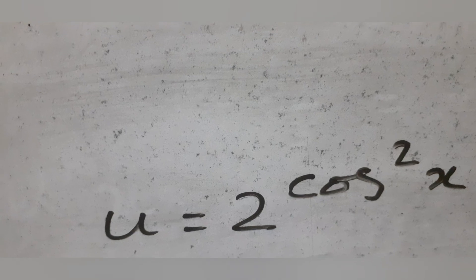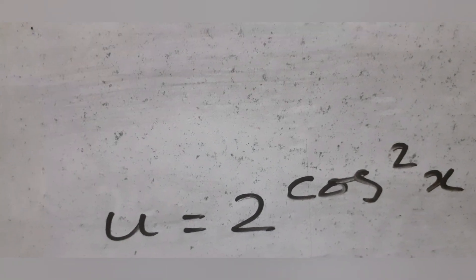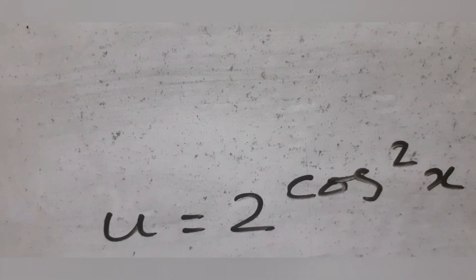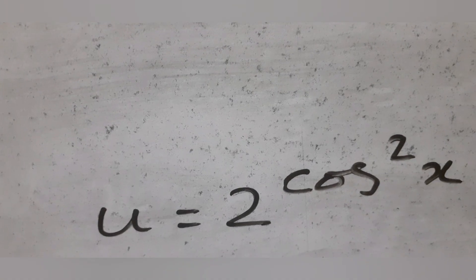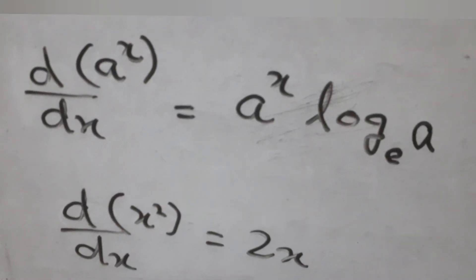Now u equal to 2 power cos square x is of the form u equal to a power x. The derivative of a power x with respect to x is a power x into log a to the base e.